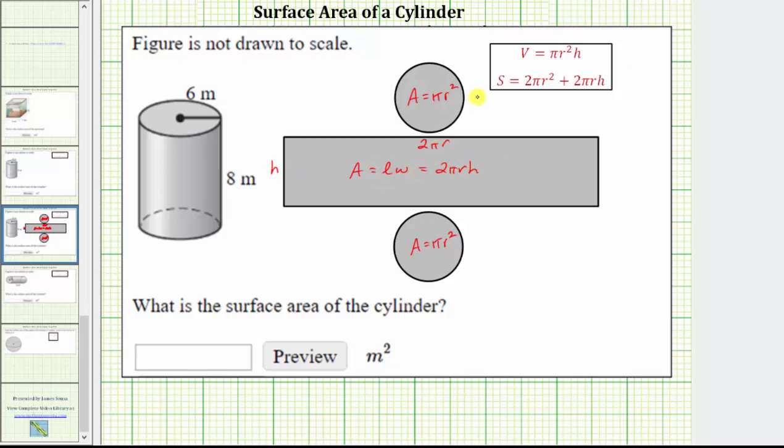So looking back at our surface area formula, 2πr² gives us the area of the top and bottom, which are circles. Then we have plus 2πrh, which gives us the area of the side of the cylinder, which if we cut the side and unroll it, would be this rectangle here.